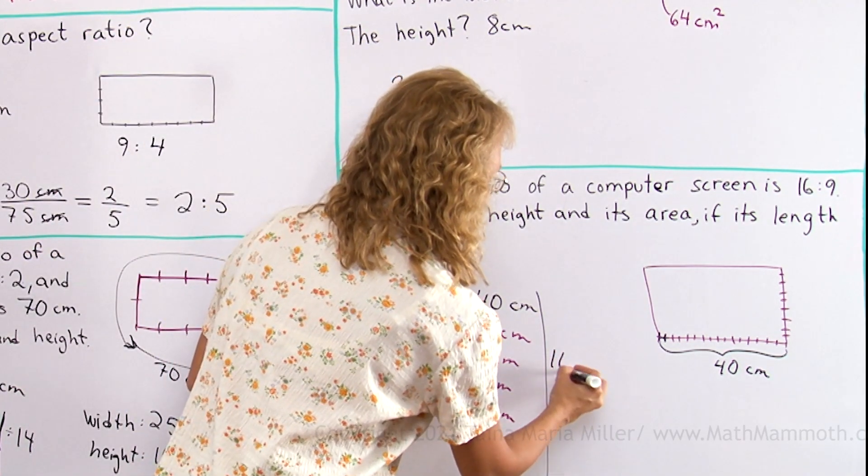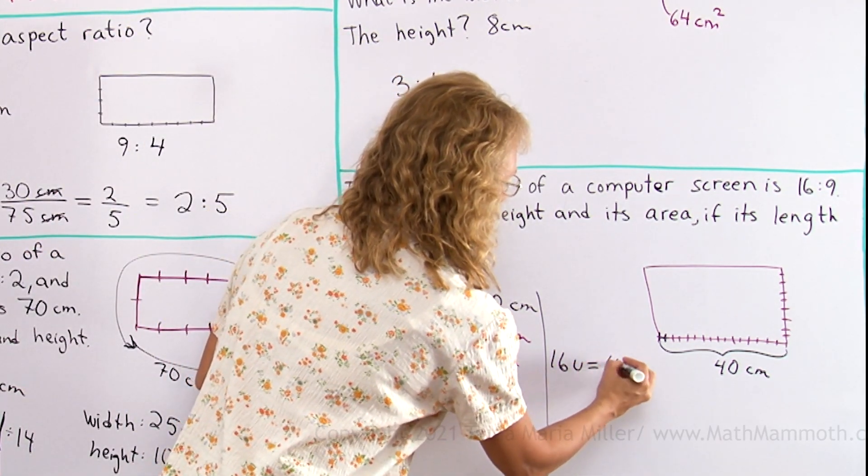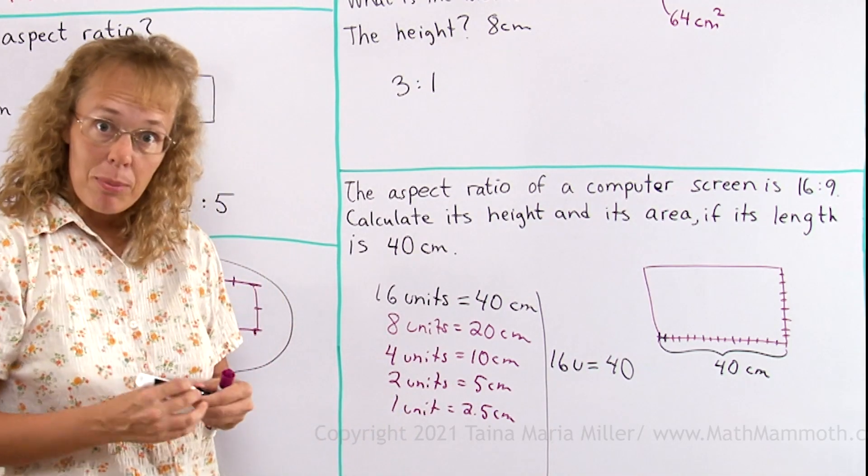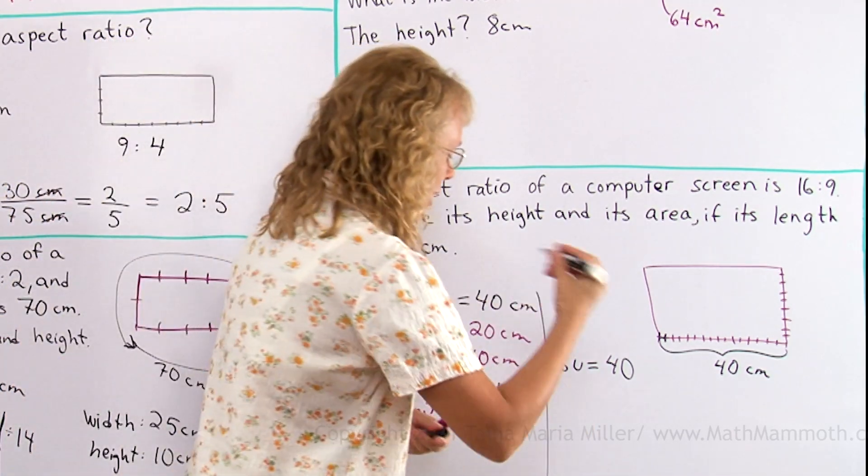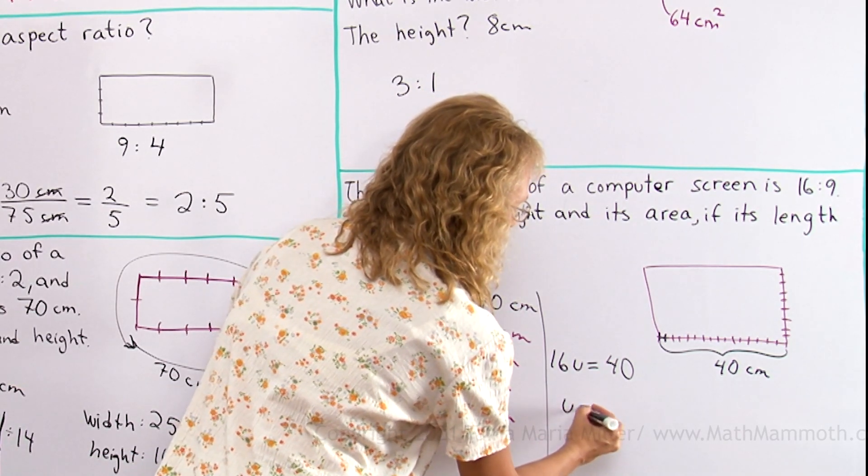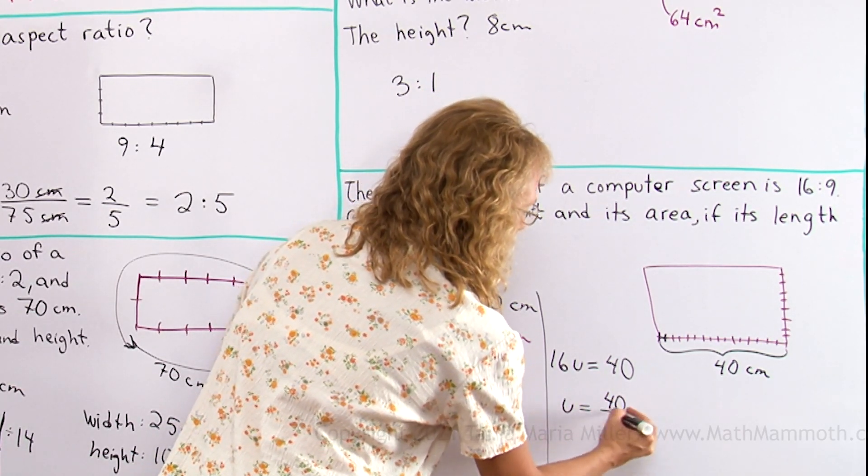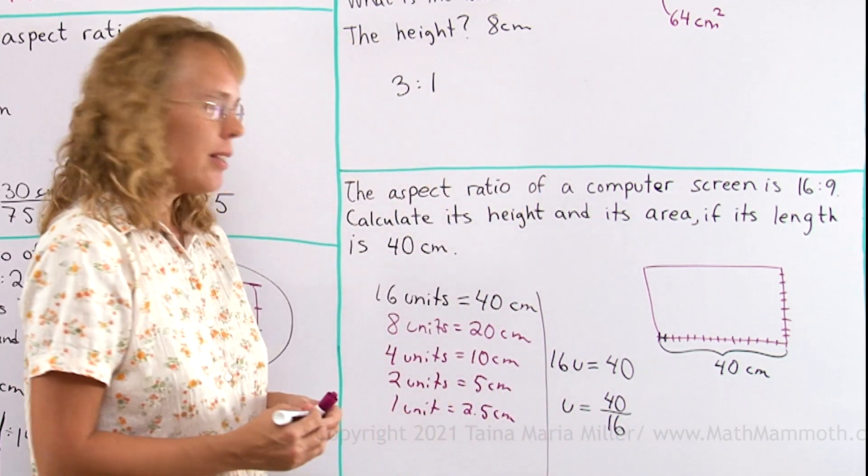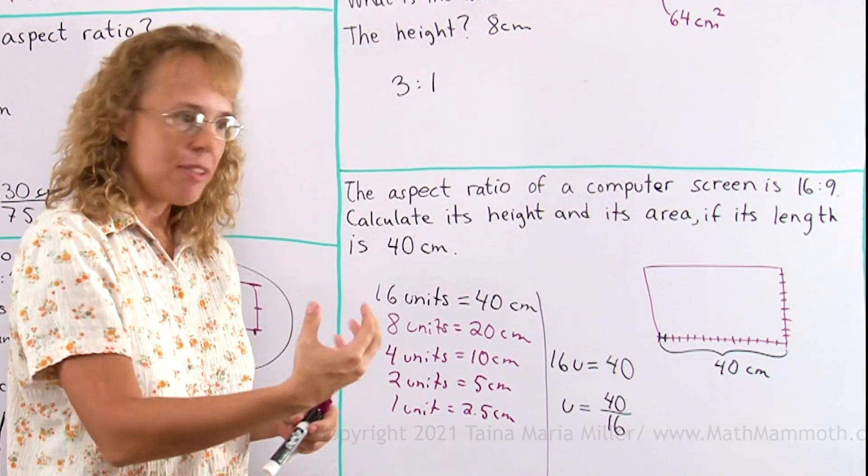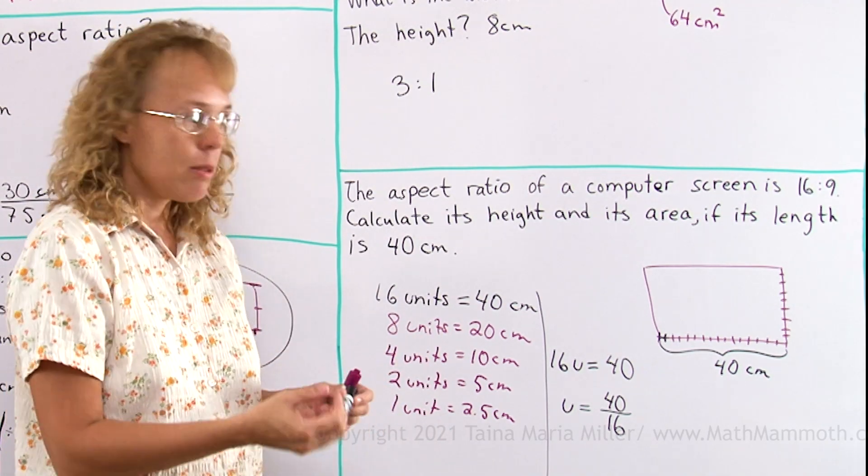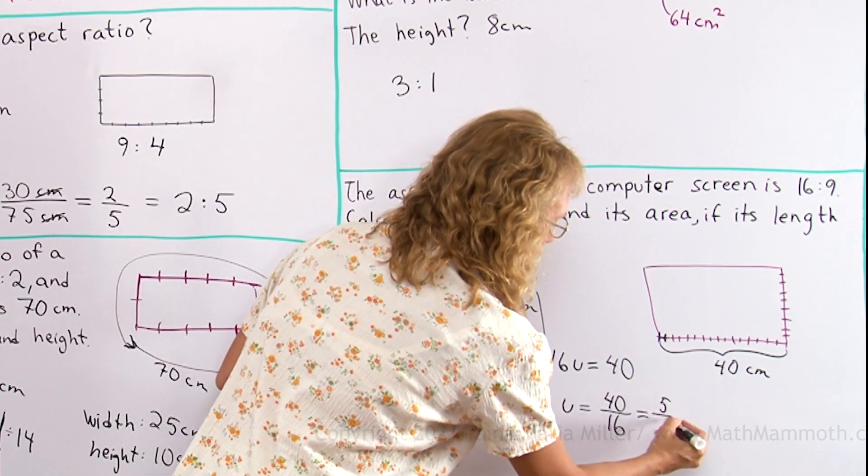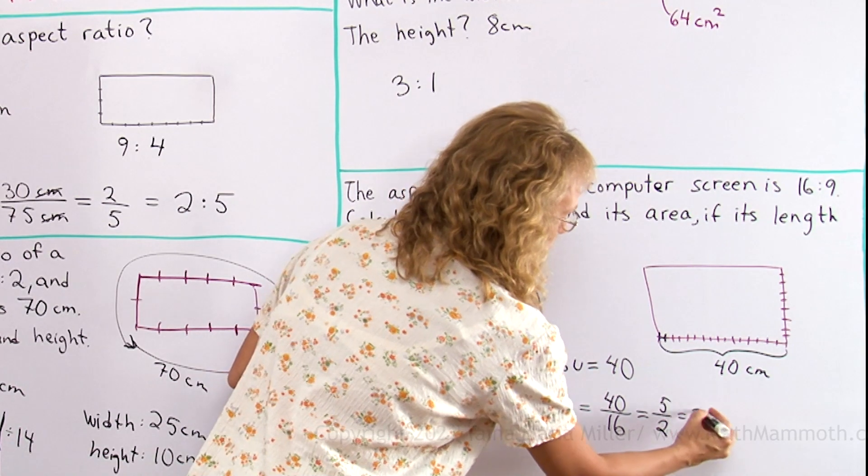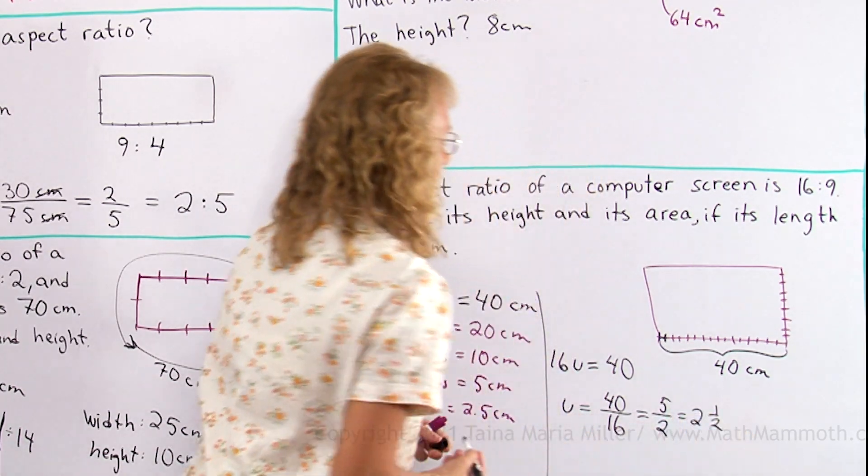16 units. I'll write it as 16u equals 40. In this equation, it's a multiplication equation. I need to divide both sides by 16. So then it leaves u alone on this side and we get 40 divided by 16. Now that, if you think of it as a fraction, it simplifies. Both of those are divisible by 4 or by 8 even. So I simplify it by 8. I get 5 here and 2. 5 over 2, which is 2 and a half.